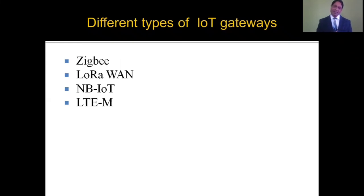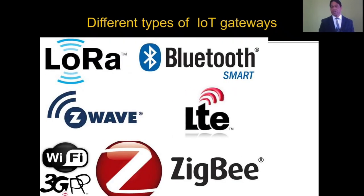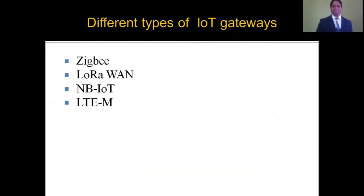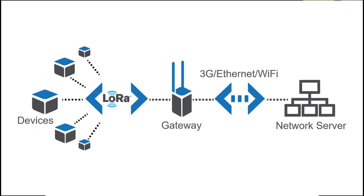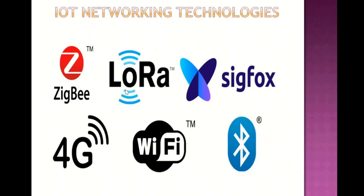There are different types of IoT gateways, and the choice of gateway can impact the quality and cost of the network. Some popular IoT gateways include Zigbee, LoRaWAN, NB-IoT, LTE, Sigfox, and others. In summary, an IoT gateway is essentially a router that sends data from the first stage to the third stage.